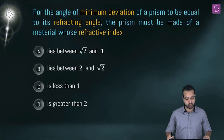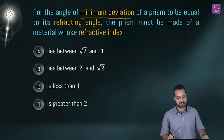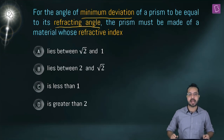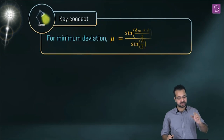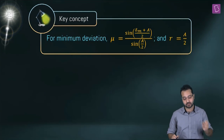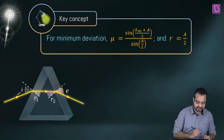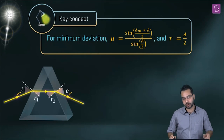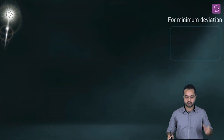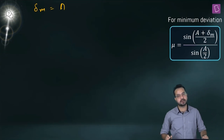For the angle of minimum deviation of a prism to be equal to its refracting angle, the prism must be made of a material whose refractive index lies between root 2 and 1, between 2 and root 2, is less than 1, or greater than 2. The condition to fulfill is δ_m = A. The key concept: μ = sin((δ_m + A)/2) / sin(A/2), r = A/2, and i = e at minimum deviation.